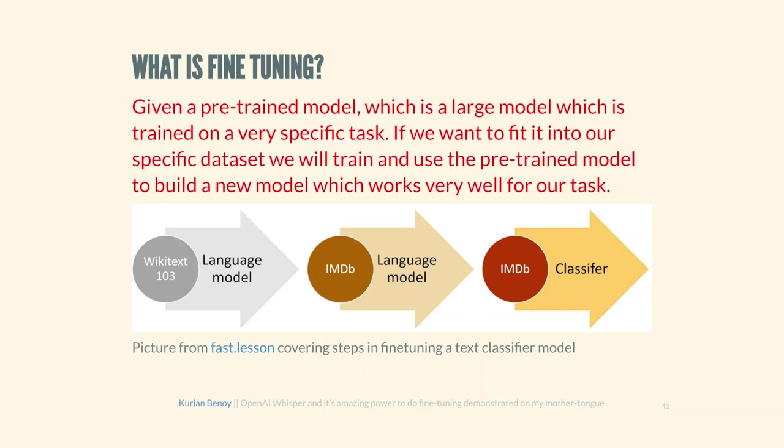What is fine-tuning? Fine-tuning a particular model basically means we already have a large model trained on a large corpus. For example, a Wikipedia language model trained on the WikiText language dataset. If you want to fine-tune on your specific dataset, you can first train a language model on your particular task and then do classification or whatever task you want to perform.